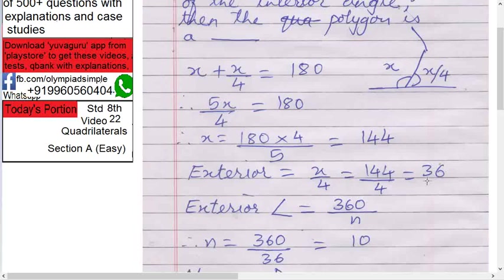Now what we have to find is number of sides. What is the formula for exterior angle? Exterior angle equals to 360 upon n number of sides. But here we know exterior angle. So take n on this side, exterior angle on this side. So we get n equals to 360 upon 36 equals to 10. So the number of sides of the polygon is 10.